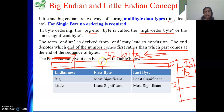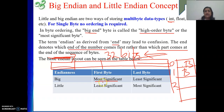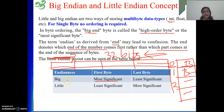The basic endian layout can be seen in a table. In big endian, the most significant byte is stored first — at the lowest memory address. Then the next byte, then the next, and finally the LSB is stored at the highest address among the bytes used.